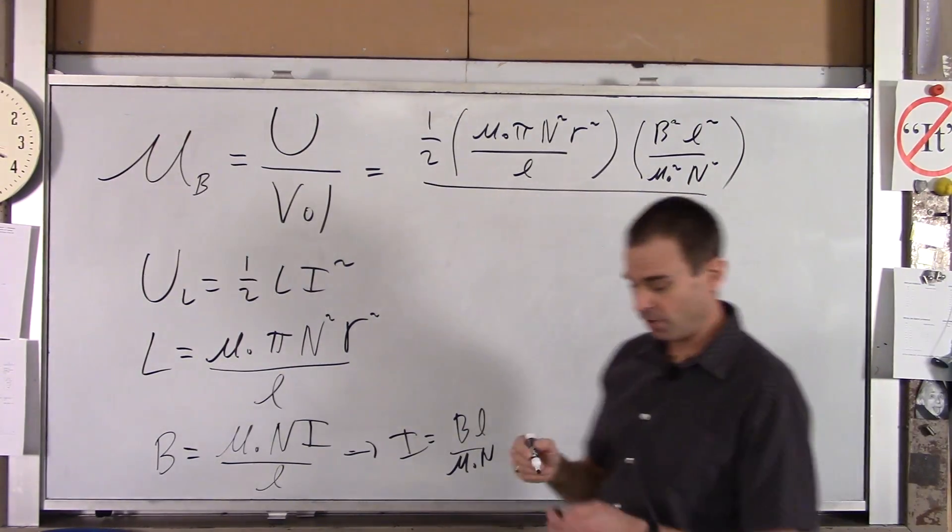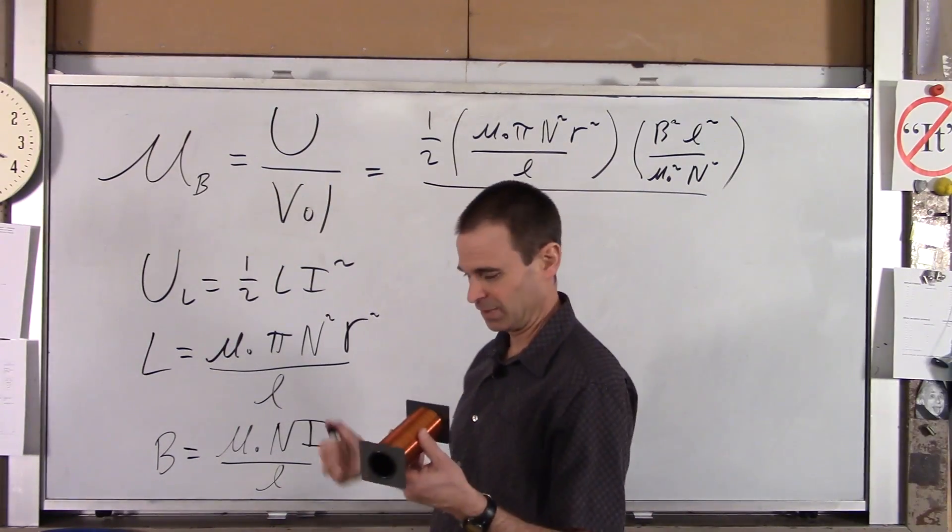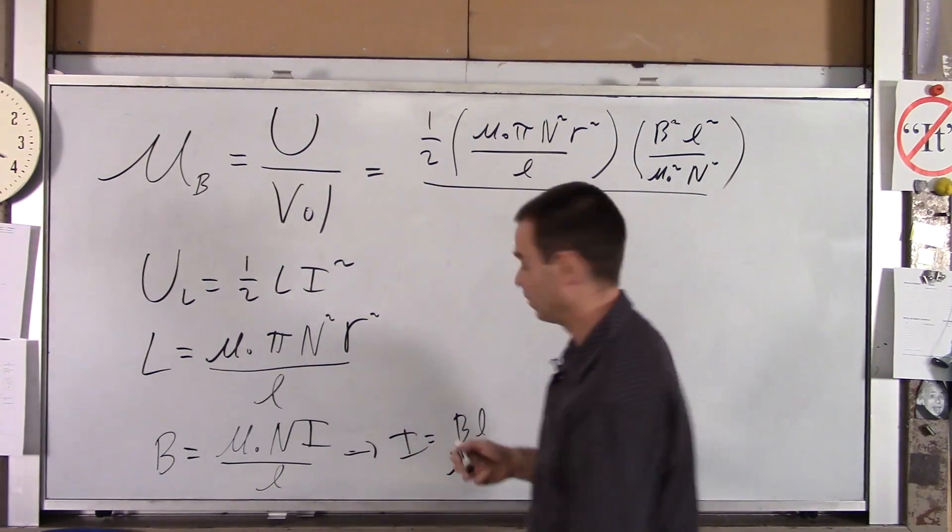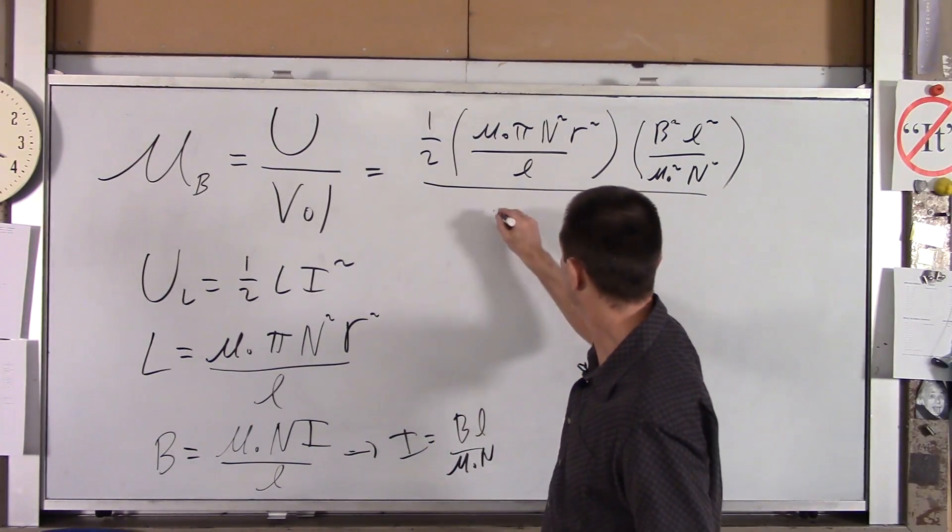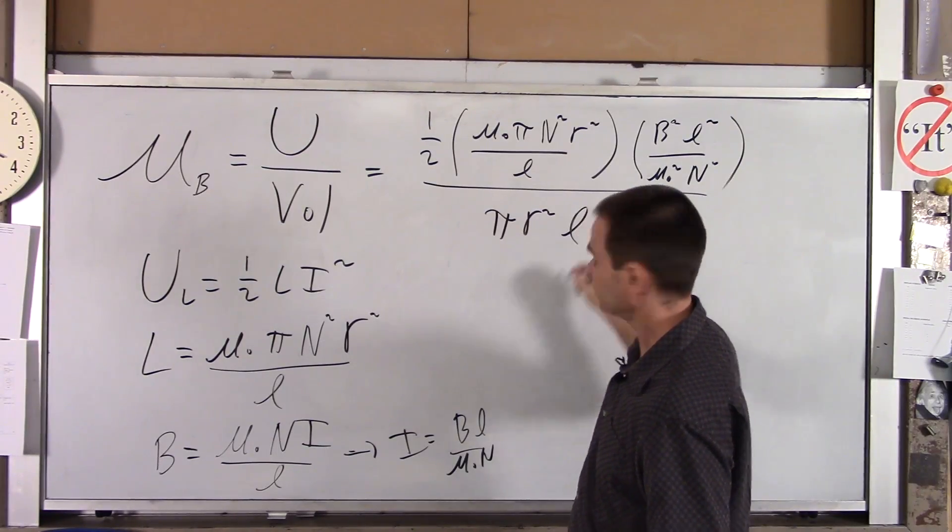All over the volume of the cylinder. Well, what's the volume of the cylinder? It's surface area, which is π R squared times L. So this is π R squared times L.